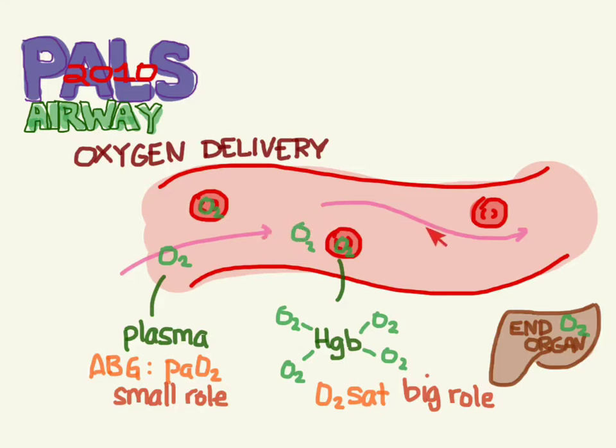Plasma dissolved oxygen plays a very small role compared to hemoglobin bound oxygen. Another important factor is actually the cardiac output, which propels oxygen through the blood vessels. Any problems in this system can affect oxygen delivery - if cardiac output is poor, that decreases oxygen delivery. Patients with anemia may not have enough hemoglobin to carry oxygen, which also affects oxygen delivery.